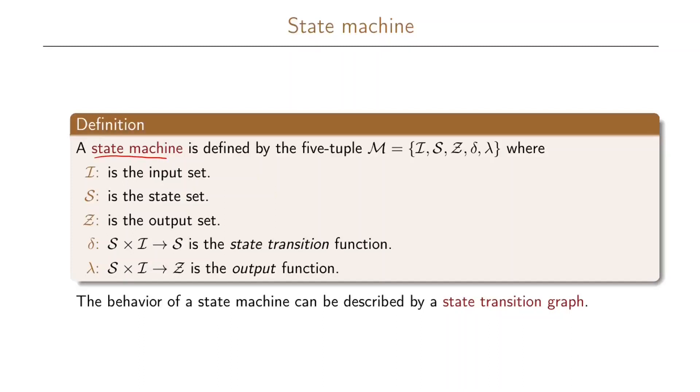A state machine is defined by the five-tuple M which is given by I, S, Z, delta, and lambda.